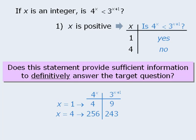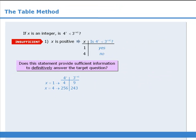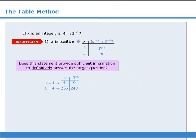So when x equals 1, the answer to our target question is yes, and when x equals 4, the answer to our target question is no. Since we cannot definitively answer the target question, statement 1 is not sufficient.